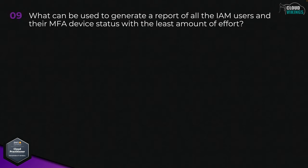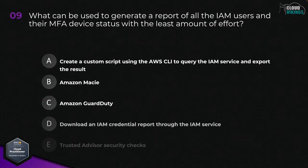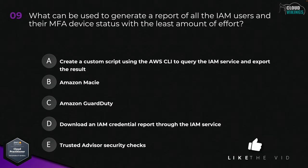Question nine: what can be used to generate a report of all IAM users and their MFA device status with the least amount of effort? Options are: A, create a custom script using the AWS CLI to query the IAM service and export the result; B, Amazon Macie; C, Amazon GuardDuty; D, download an IAM credential report through the IAM service; or E, Trusted Advisor security checks. The correct answer here would be D, download an IAM credential report through the IAM service.